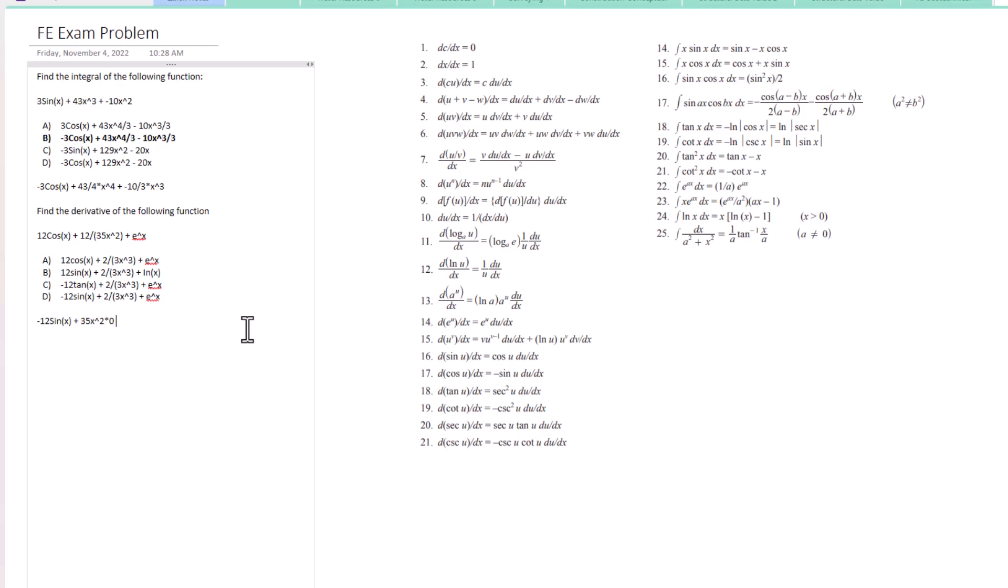Low d high minus high, which is 12, times d low, which would be 70x. Then take that entire function over the square of what's below, which in this case would be 35x² squared.